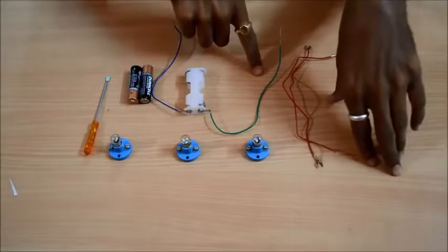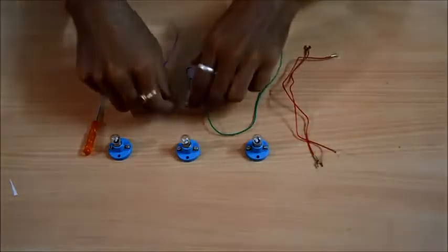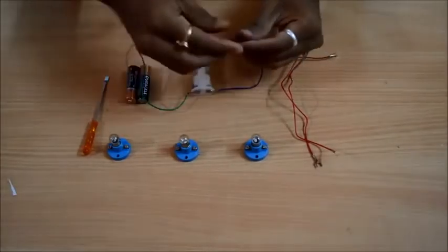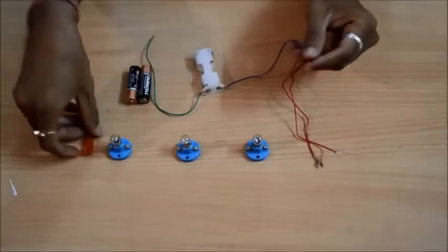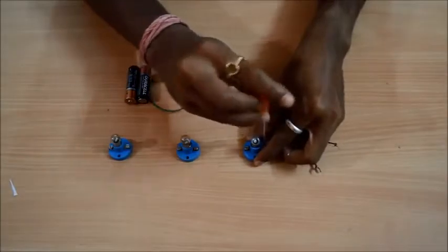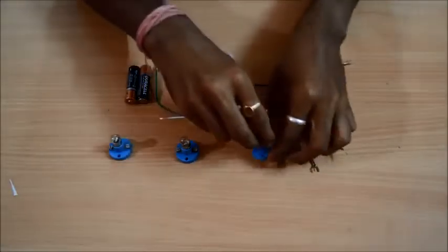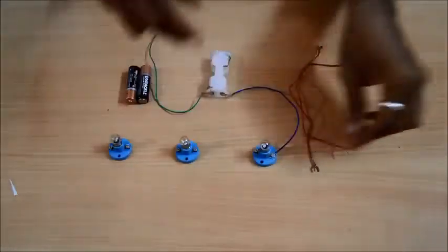So what I am going to do is I am going to connect the positive end of the power source, which is from the battery holder, into the first end of the bulb holder. So that's the first one which has gone in there.